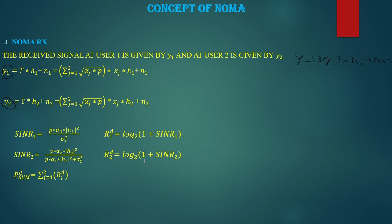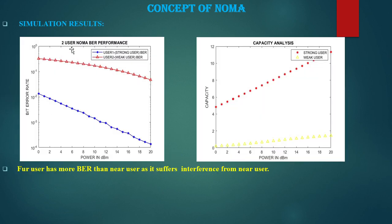This is the simulation result of NOMA with power in dBm versus bit rate for the two users. User 1, the strong user, will have lesser bit rate, but user 2, the weak user, will have much higher bit rate. This is because user 2 cannot eliminate the interference coming from user 1. The far user has more bit rate than the near user as it suffers interference from the near user.